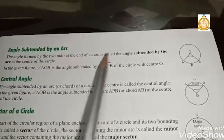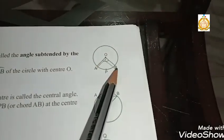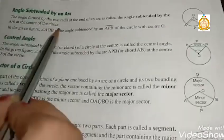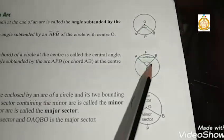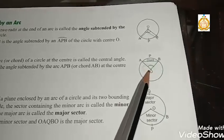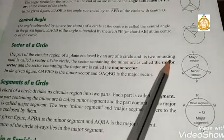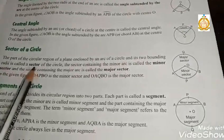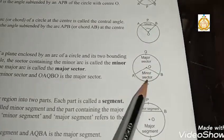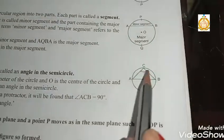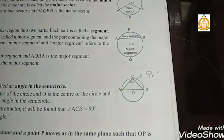The angle subtended by an arc is the angle formed by two radii at the ends of the arc. The angle subtended by arc APB at the center is called the central angle. A sector is the part of a circular region enclosed by an arc and its two bounding radii. The larger part is the major sector and the smaller part is the minor sector. The angle in a semicircle is always 90 degrees.